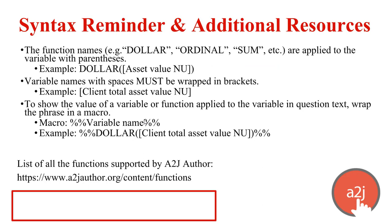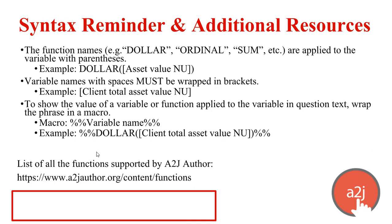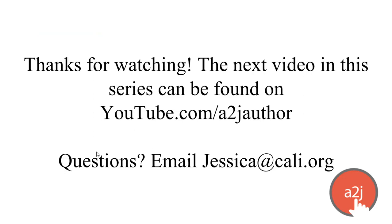Some syntax reminders: function names like DOLLAR, ORDINAL, and SUM must be applied with parentheses, and if your variable name has a space, it must be wrapped in brackets inside the parentheses. You can also use functions within macros — for example, calling out a value and formatting it with the DOLLAR function, which adds two decimal places. A full list of functions supported by A2J Author can be found in the authoring guide at a2jauthor.org/content/functions. Thank you for watching video three. The next video can be found at youtube.com/a2jauthor. If you have questions, email jessica@cali.org.